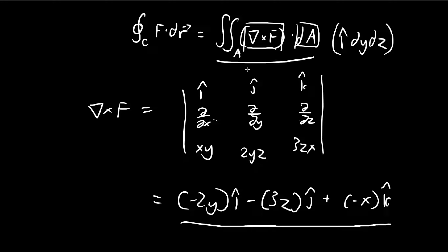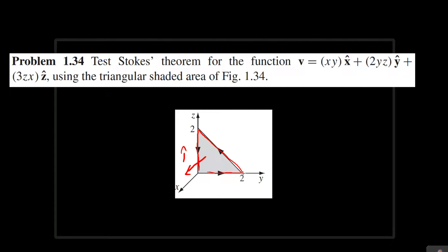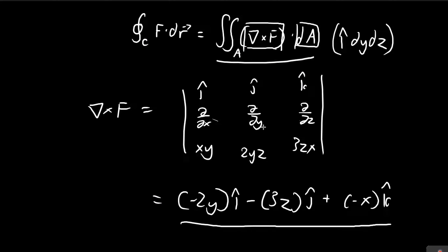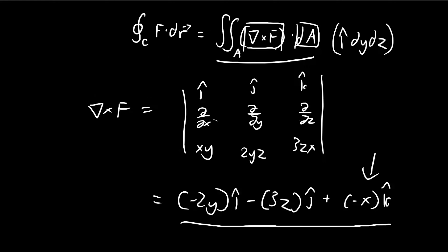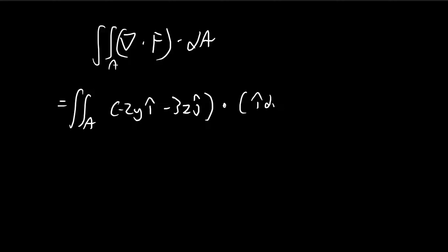So in our surface integral, we have the vector field. We're evaluating this vector field in this yz plane. In this yz plane, x is always equal to 0. So first of all, we can take away that final component over here, because this is always equal to 0. So we have minus 2y in the i direction and minus 3z in the j direction. And then this final component is just 0. And then we take the dot product of this with i dy dz.